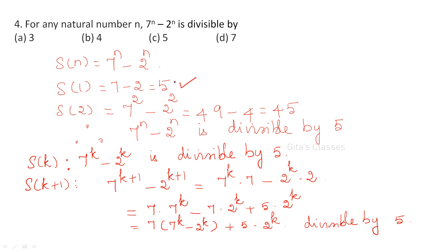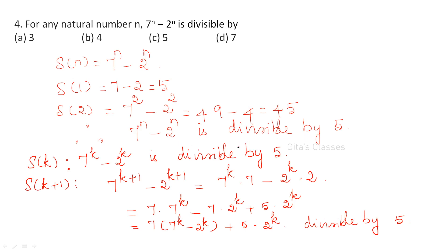5 is not divisible by any of the other given numbers such as 3, 4, 7, etc. So it is always divisible by 5. Because in an objective exam, you need not spend a lot of time on every question — you can find out quickly.